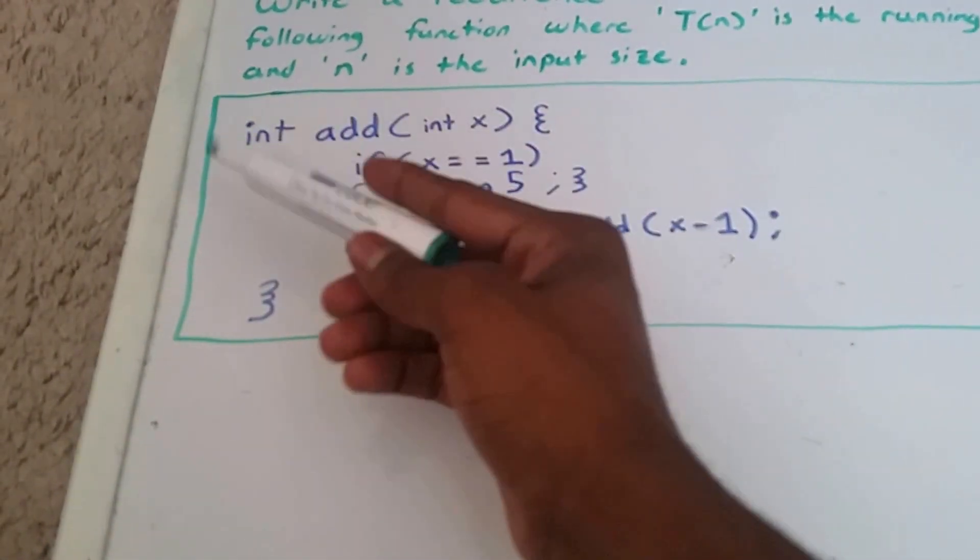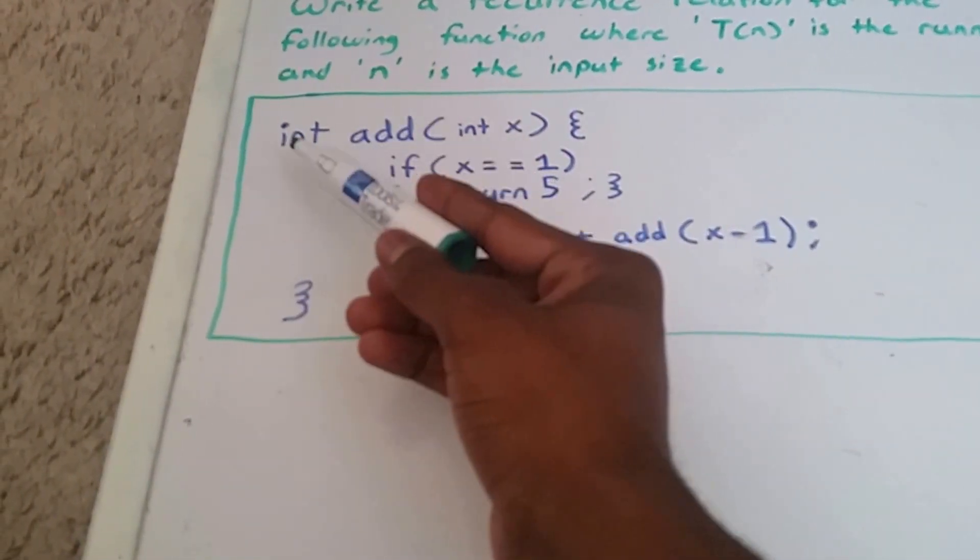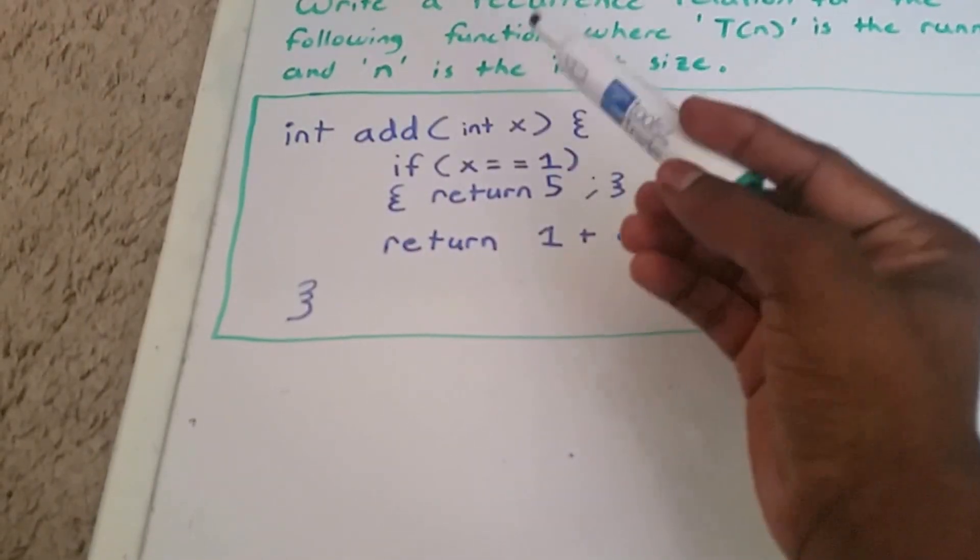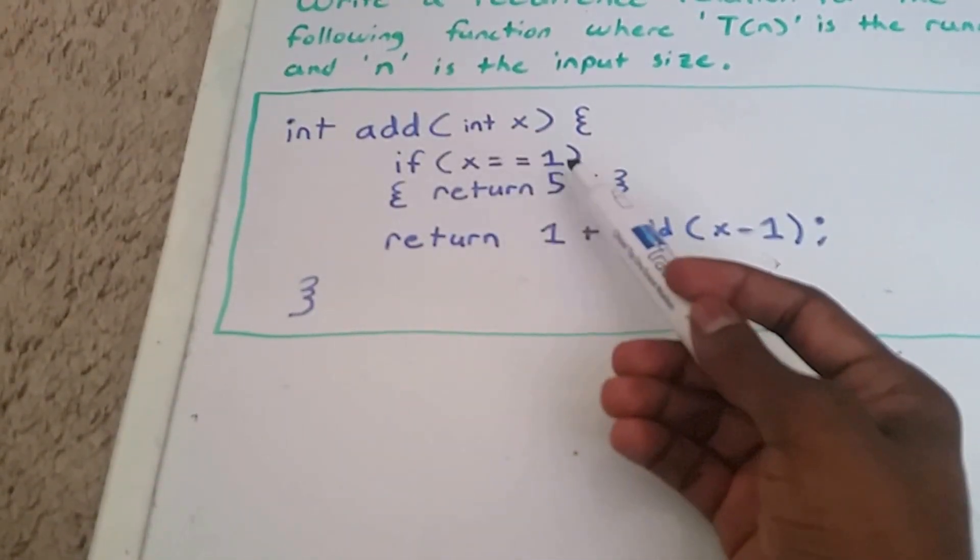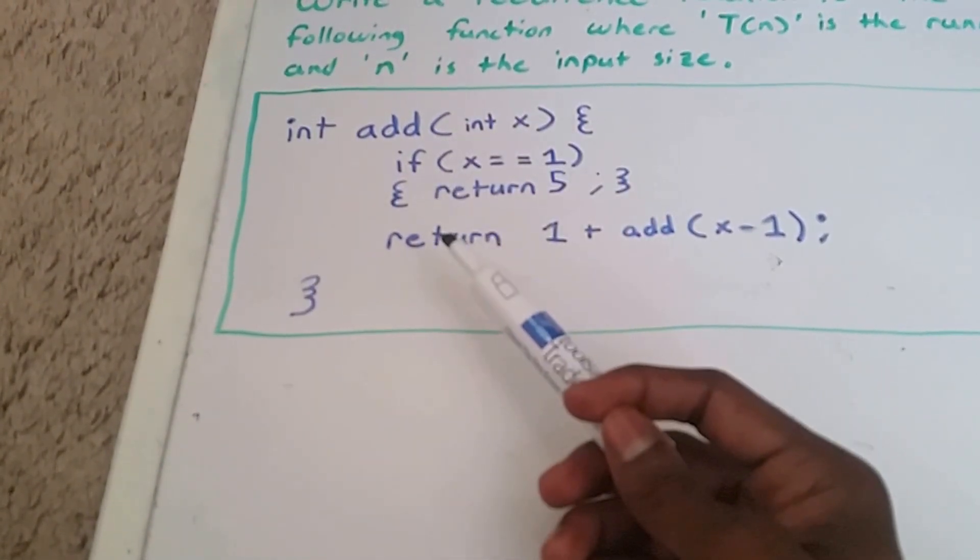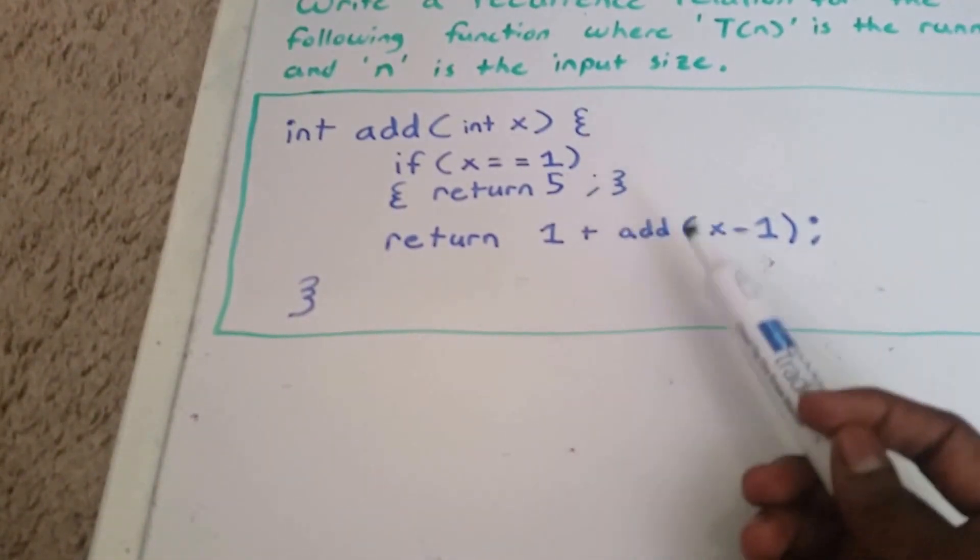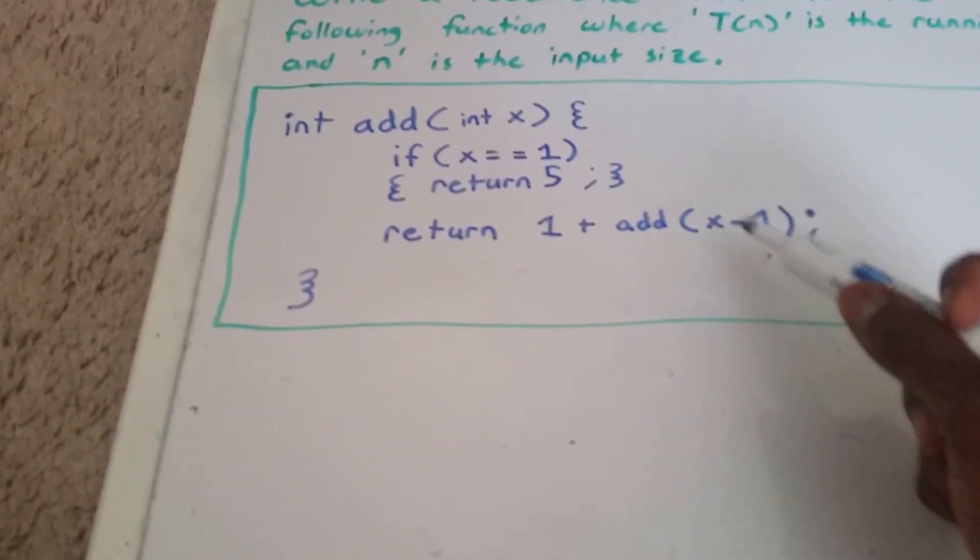So here we have our function, integer add integer x. It's a function called add that returns an integer value, where the parameter x is also an integer. Now if x is equal to 1, this function returns 5, otherwise this function returns 1 plus add(x minus 1). So the input is 1 less than before.